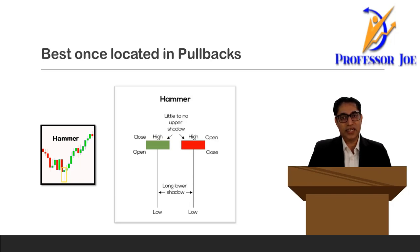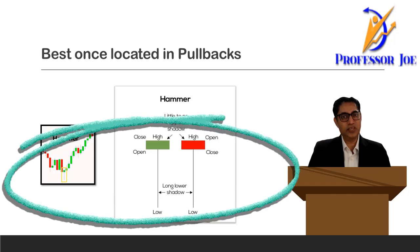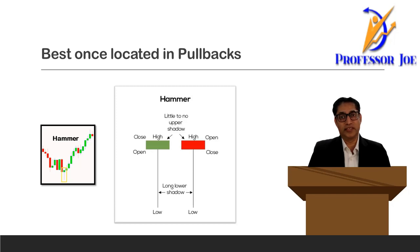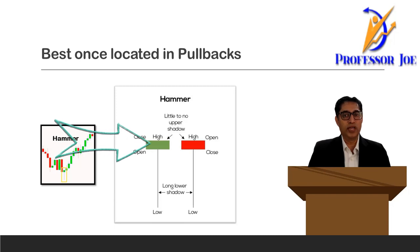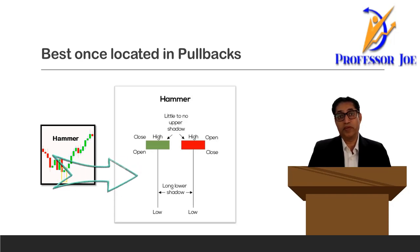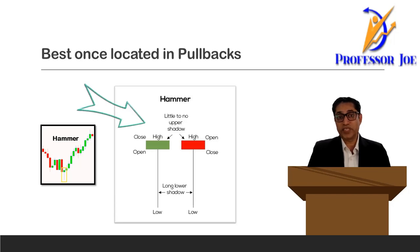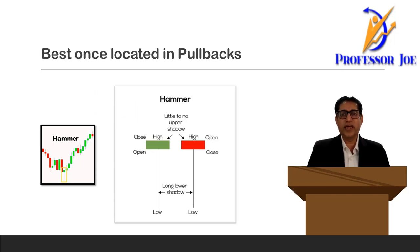Let us understand how a hammer looks like. As you can see on the screen, this is how a hammer candlestick pattern looks like. You can see that the body of the candle is very very small and it is on the top side of the candle. The tail is almost three, four, maybe five times longer than its body and it is on the bottom side of the body. On the top side of the body, you will either not see a tail, shadow, or wick, or only a very very small one.